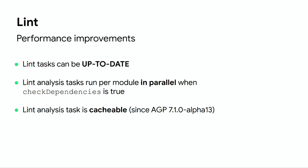AndroidX libraries are already using this feature, and the AAR artifacts do not contain resources from transitive dependencies anymore. There have been several recent Lint performance improvements. Since AGP 7.0, Lint tasks can be up to date, and Lint analysis tasks can now run in parallel per module when check dependencies is set to true. Since AGP 7.1 alpha 13, the Lint analysis task is compatible with the Gradle build cache.